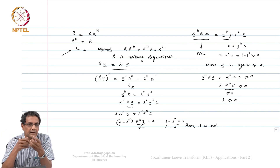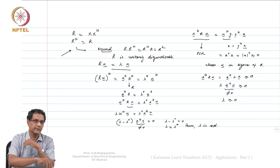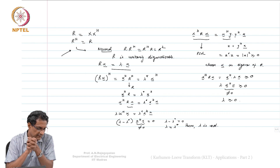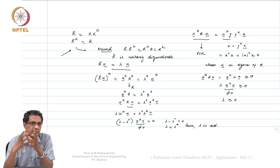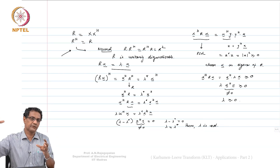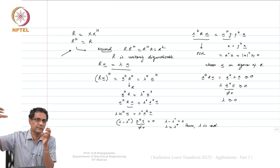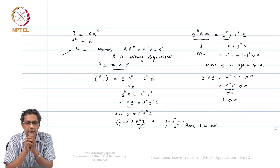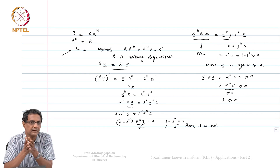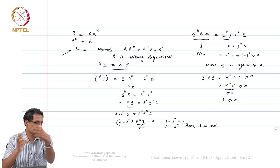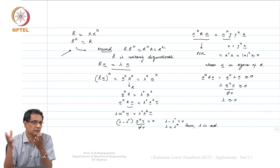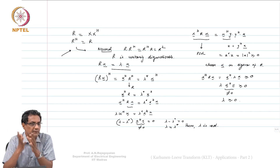Someone asked why we choose eigenvectors based on eigenvalues and why eigenvalues determine significance. When you do a diagonalization, the eigenvectors orient toward maximum variation. For example, with an ellipsoidal distribution in 2D space, the maximum variance is along one direction, and orthogonal to that is another spread. The eigenvalue lambda represents the variance, so it tells you which direction has maximum variance, followed by the second maximum, and so on.